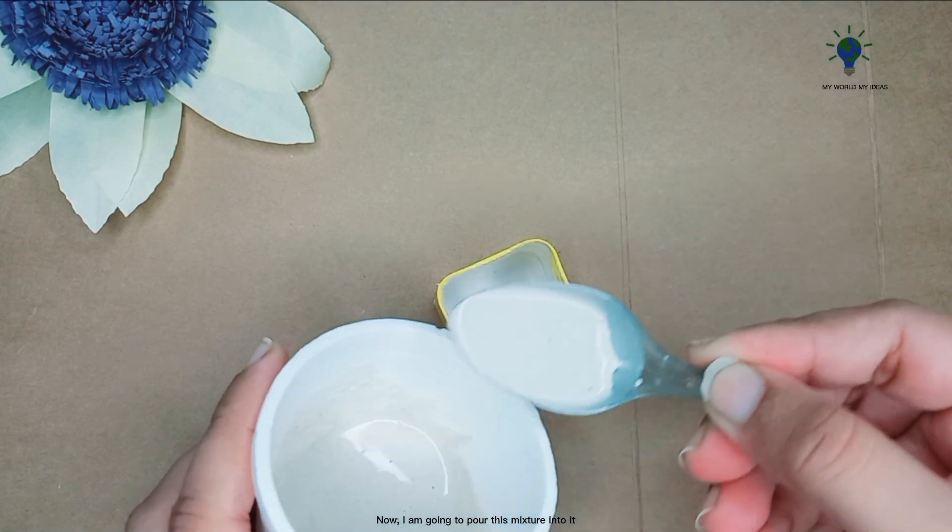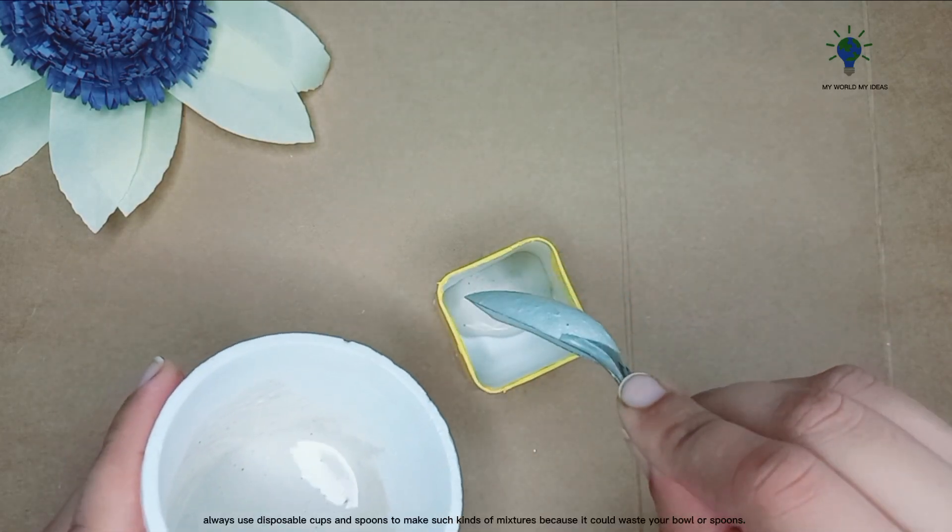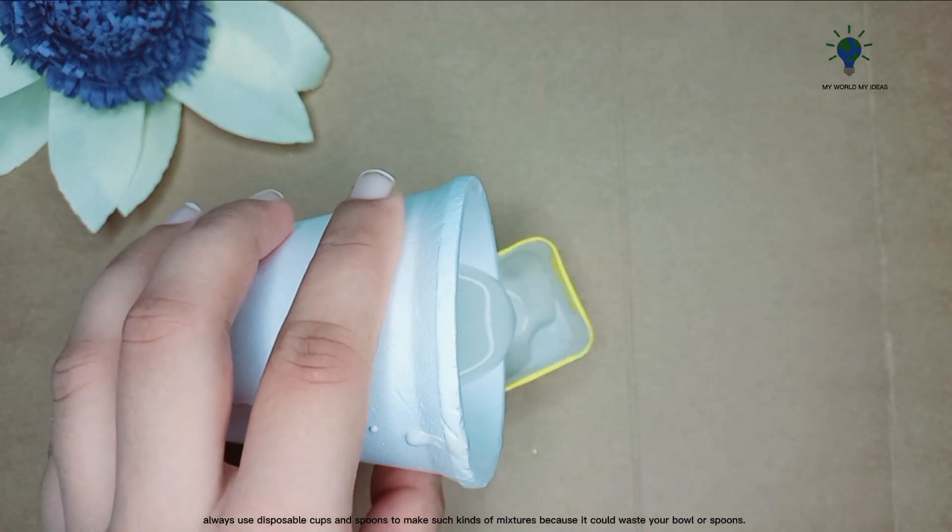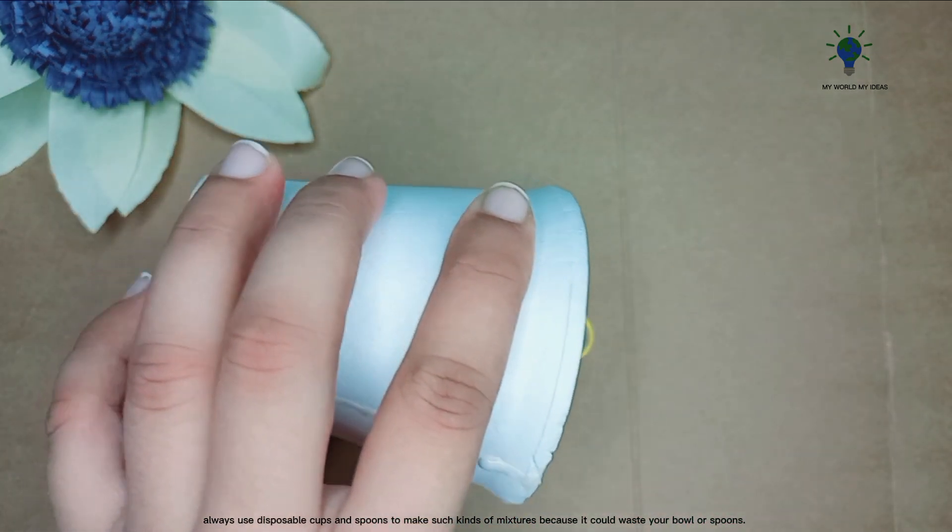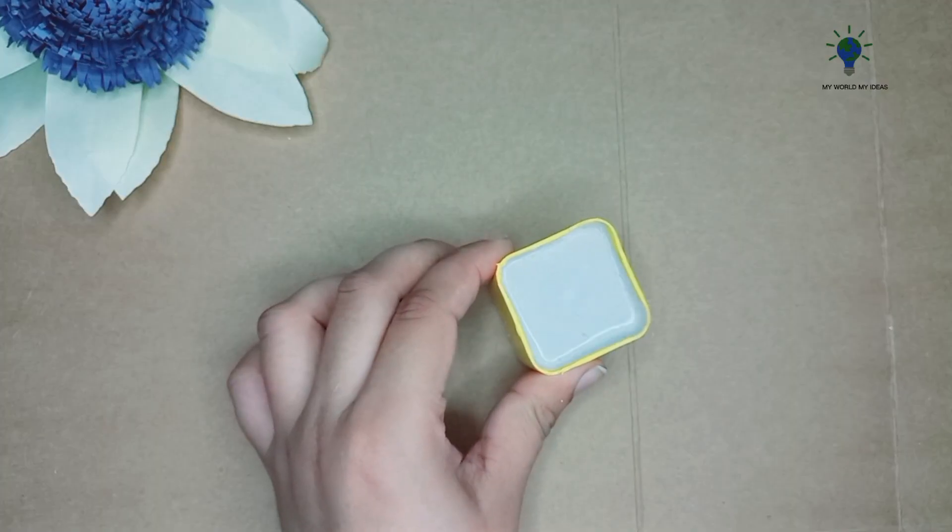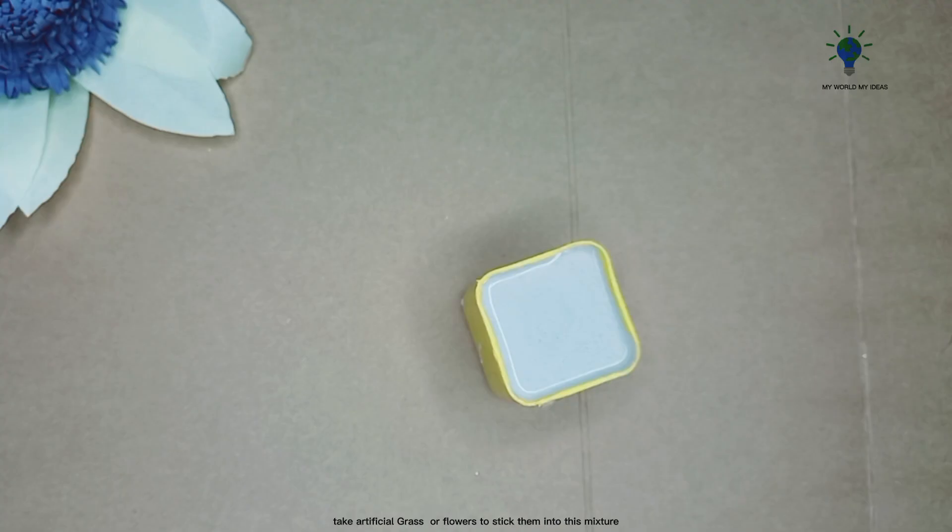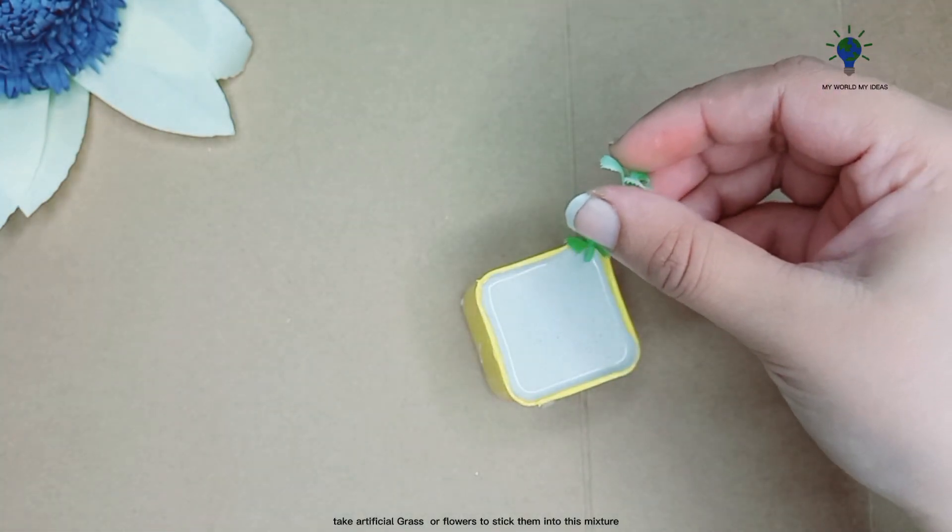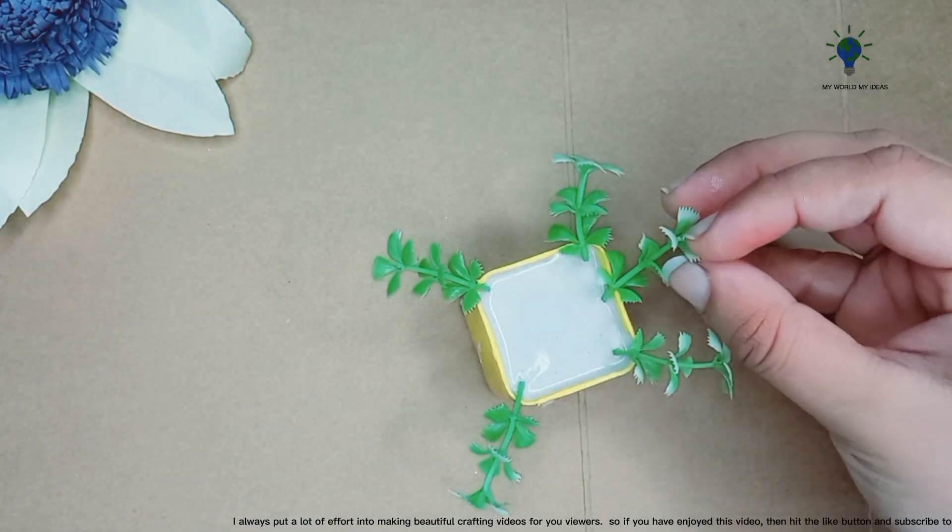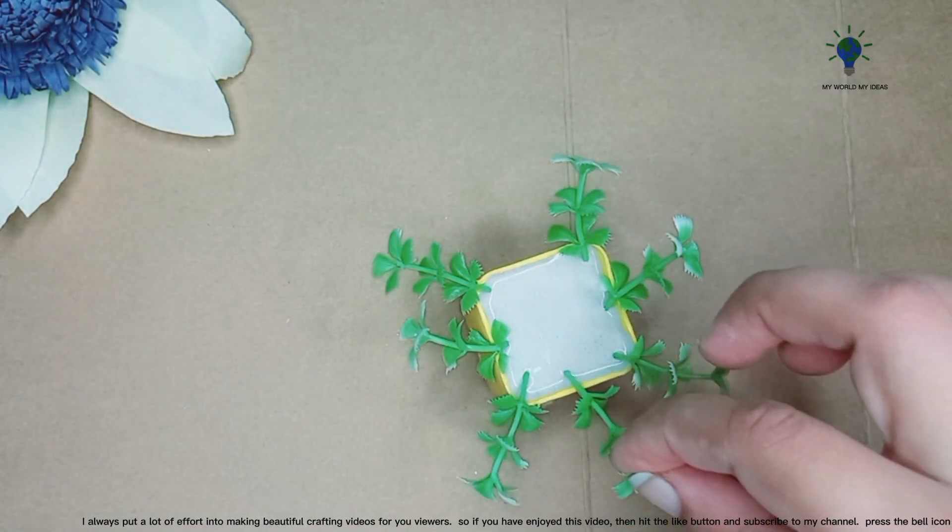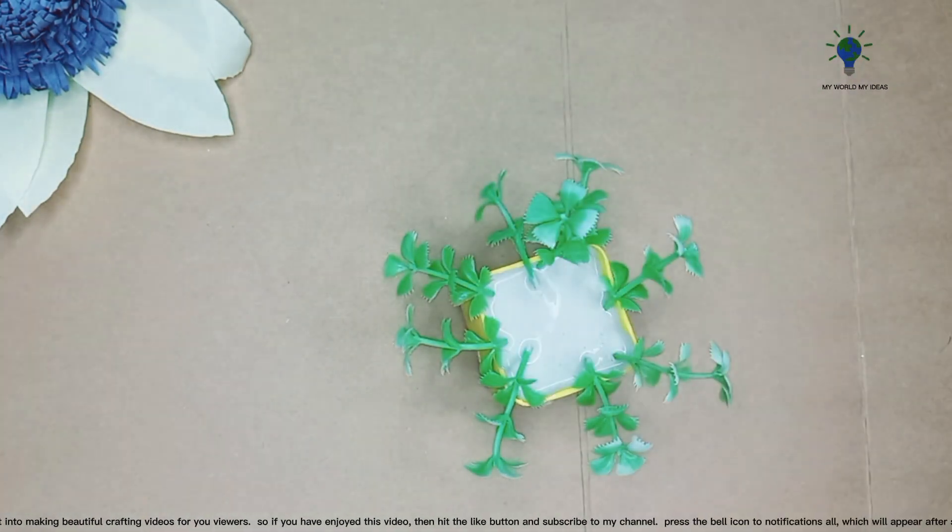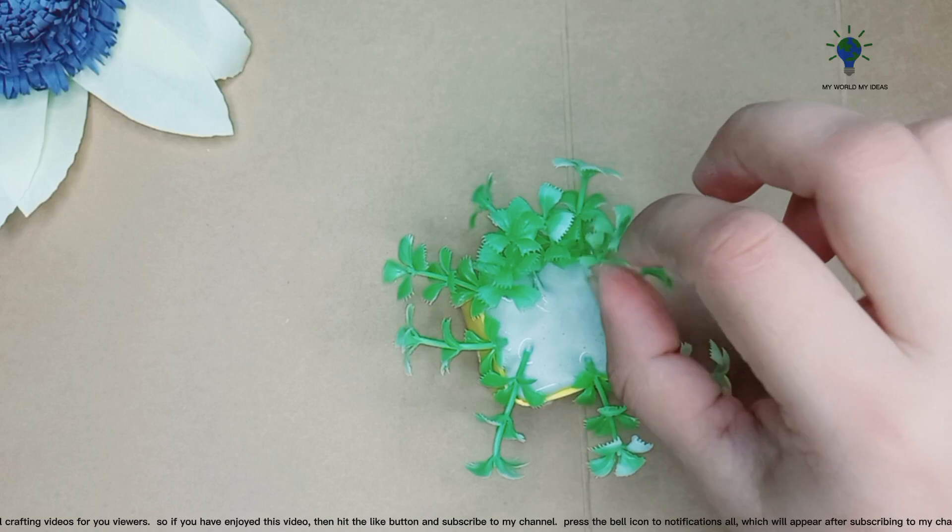Now I am going to pour this mixture into it. Always use disposable cups and spoons to make such kinds of mixtures because it could waste your bowl or spoons. Take artificial grass or flowers to stick them into this mixture. I always put a lot of effort into making beautiful crafting videos for you viewers. So if you have enjoyed this video, then hit the like button and subscribe to my channel.